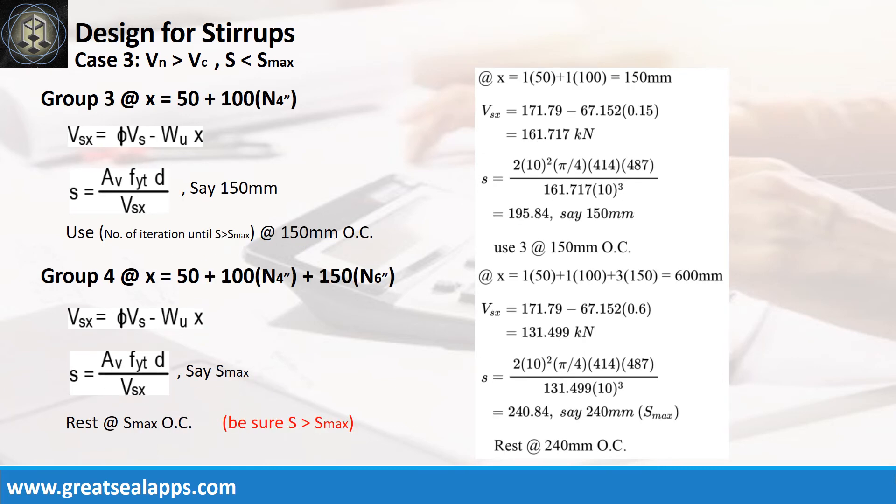For group 3 at x equals 150 mm, the web strength at x equals 150 mm is 161.717 kN, with spacing at 195.84 mm, use 3 at 150 mm.